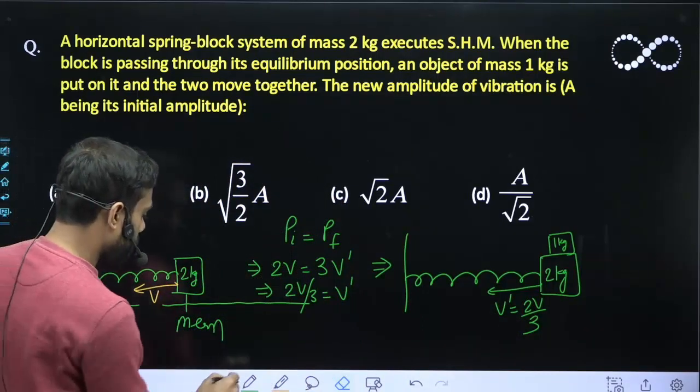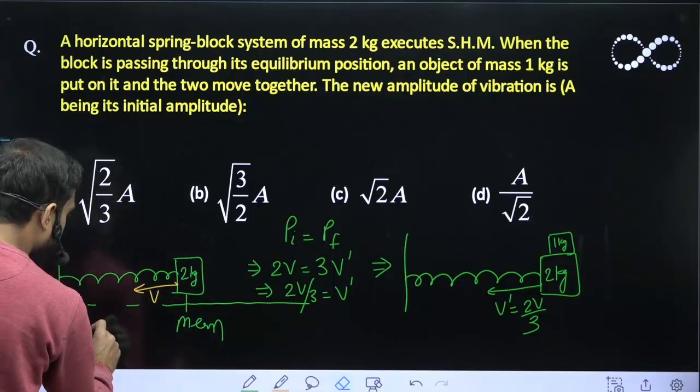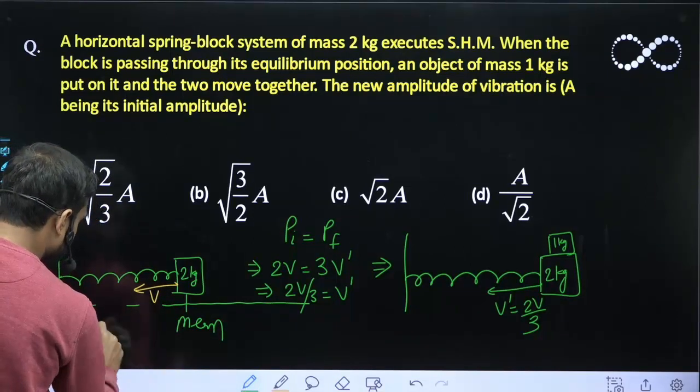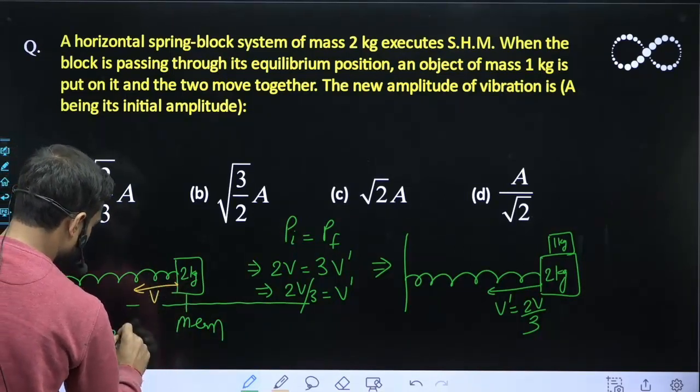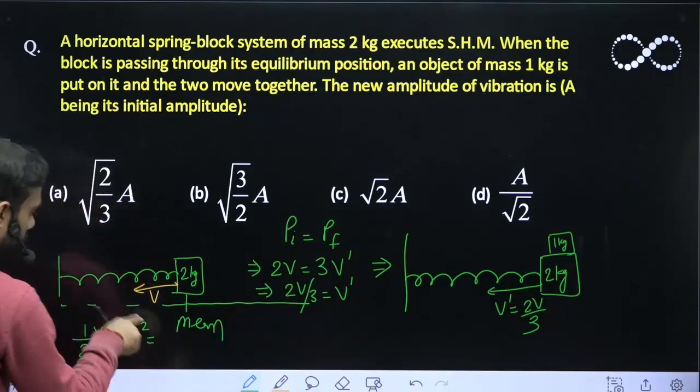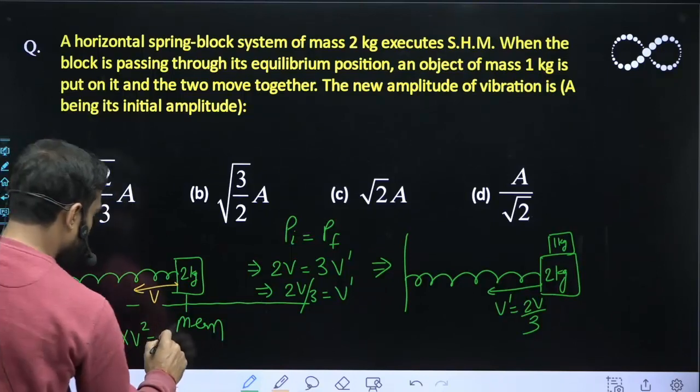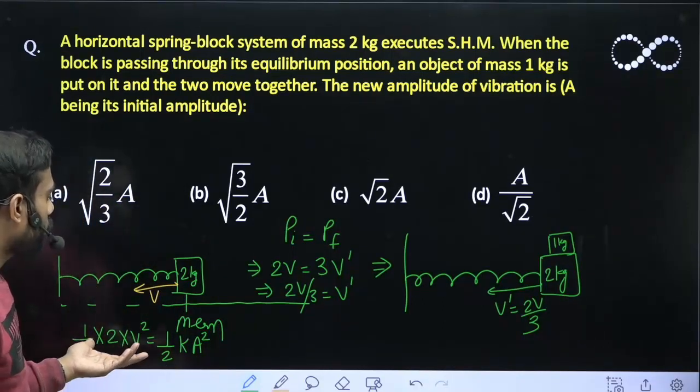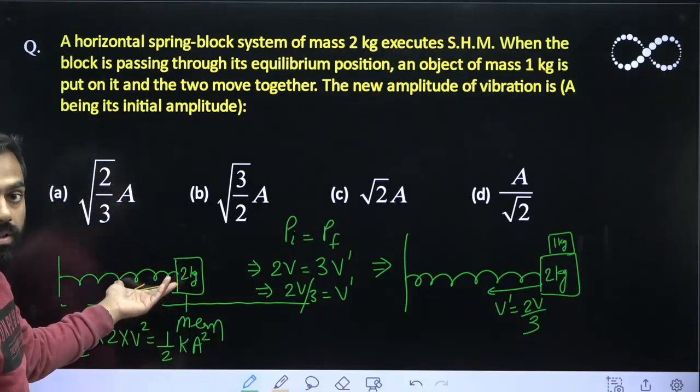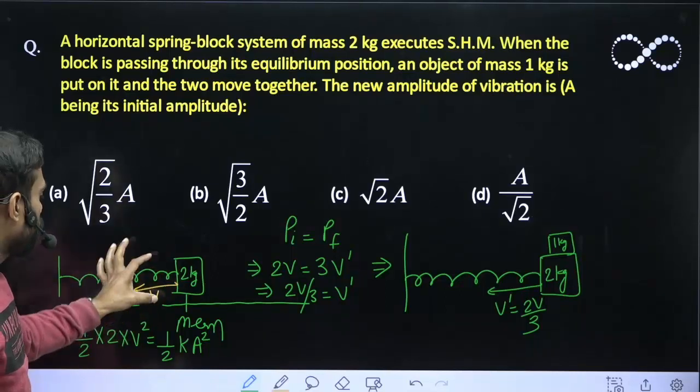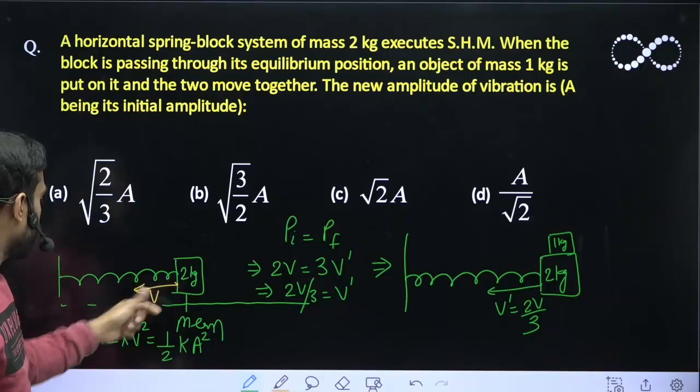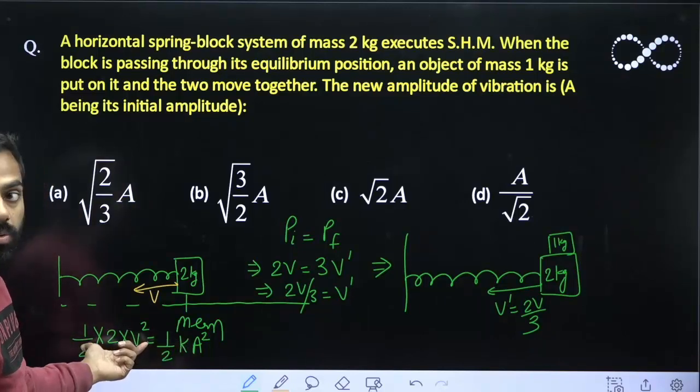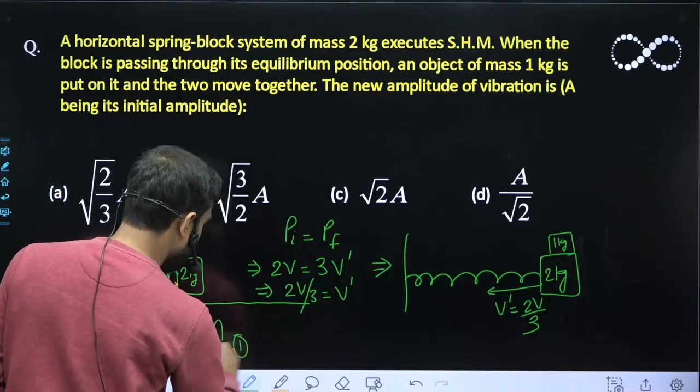Now here I will write 1 upon 2 M into V_A square. This is the kinetic energy and that must equal 1 upon 2 K A_x square, the potential energy. In the case of SHM, as you know, the maximum kinetic energy equals maximum potential energy. Since the 2 kg block is at the mean position, 1 by 2 M V_A square is the maximum kinetic energy and 1 upon 2 K x square is maximum potential energy, and these two must be equal. Let us call this equation 1.